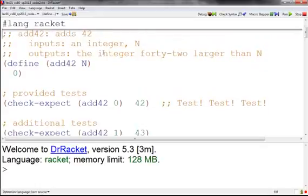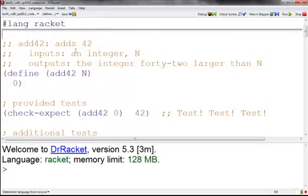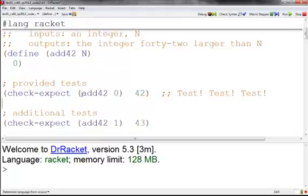I'm writing this function add42. What add42 does is it takes in an integer n and adds 42 to it. I'm going to write two test cases. I call add42 with the argument 0, it should return 42. And I call add42 with the argument 1 and it should return 43.